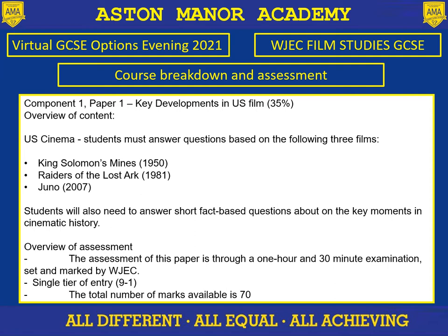We then look at a small independent film called Juno and consider how that indie production is very different from the major Hollywood productions. Students answer questions on these films in the exam. Paper one is worth 35% of their final grade, so it's quite a lot. The paper is an hour and 30 minutes long, one tiered entry, and there are 70 marks available.